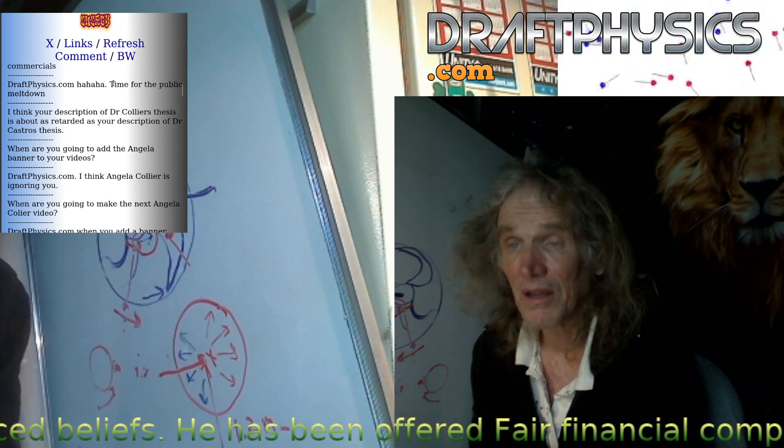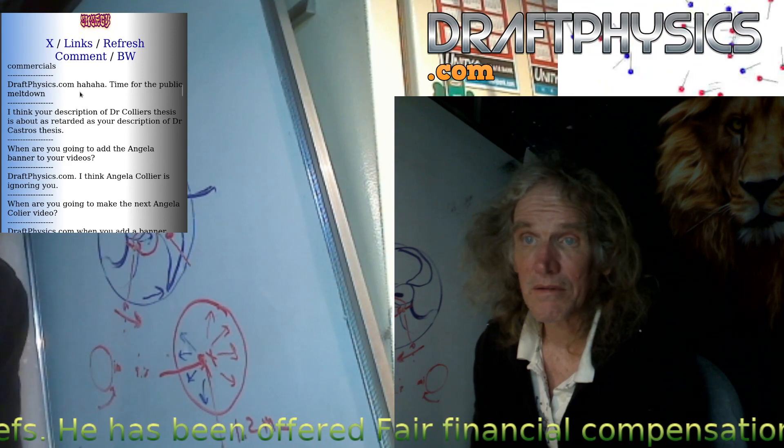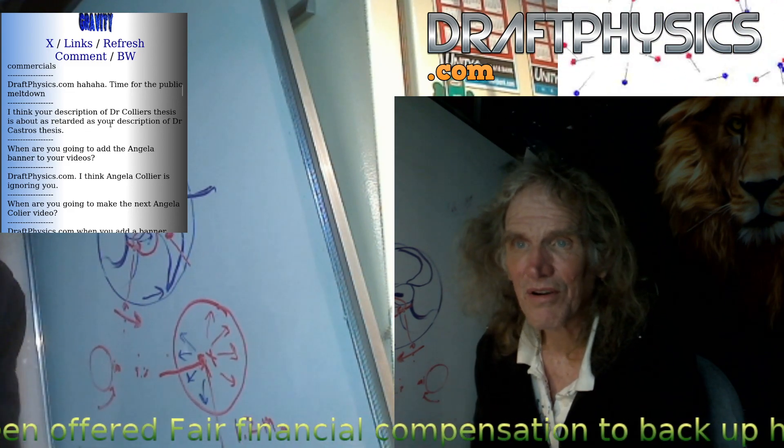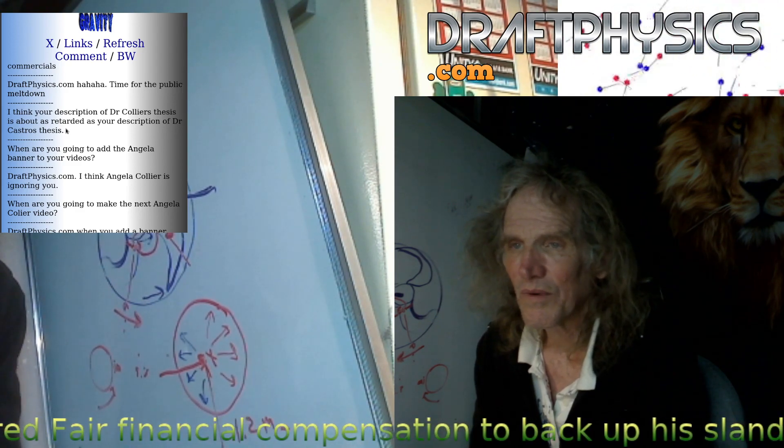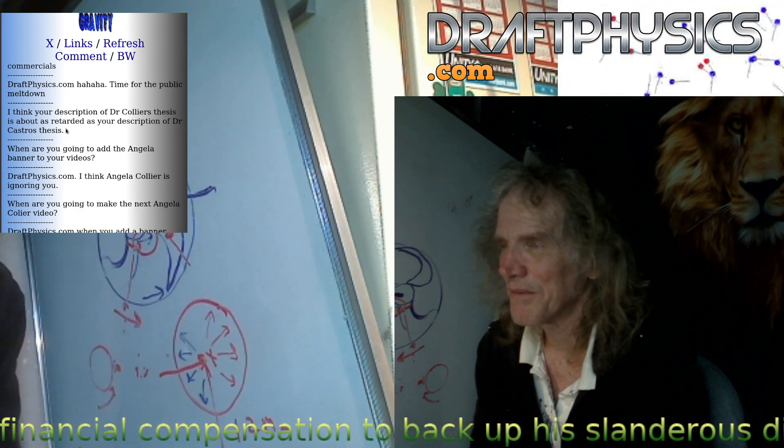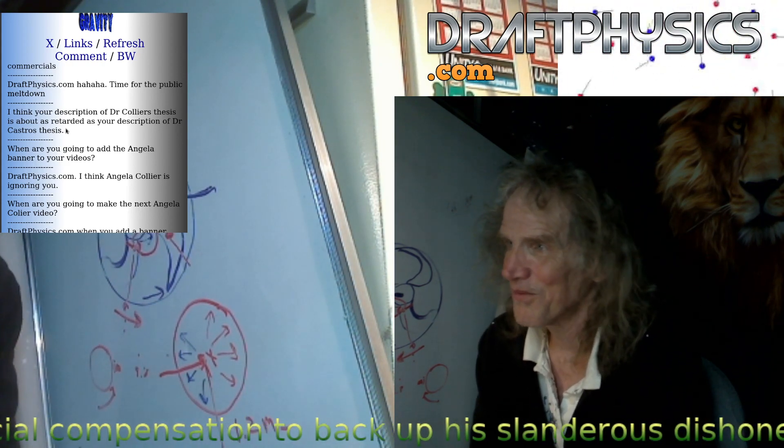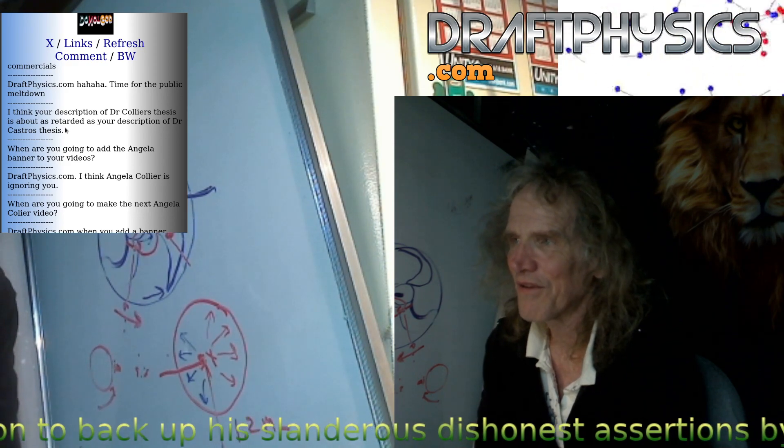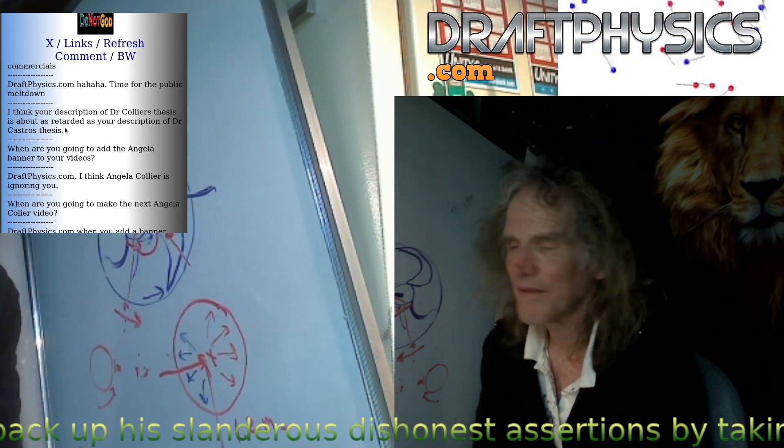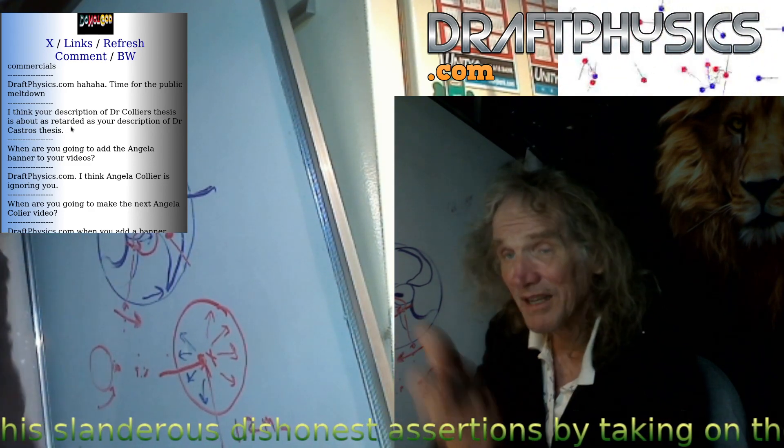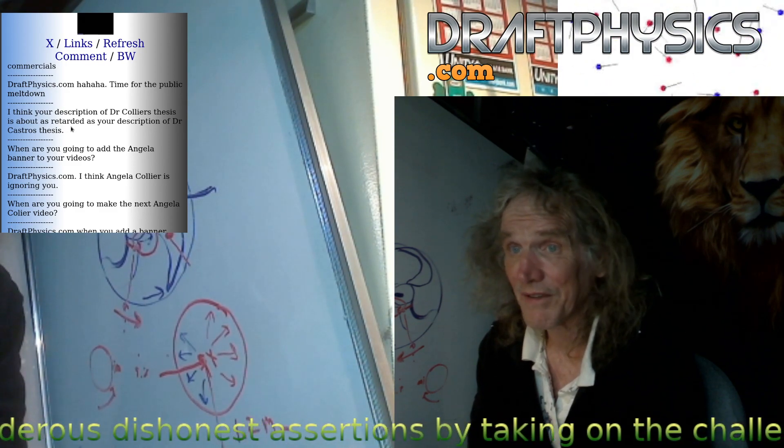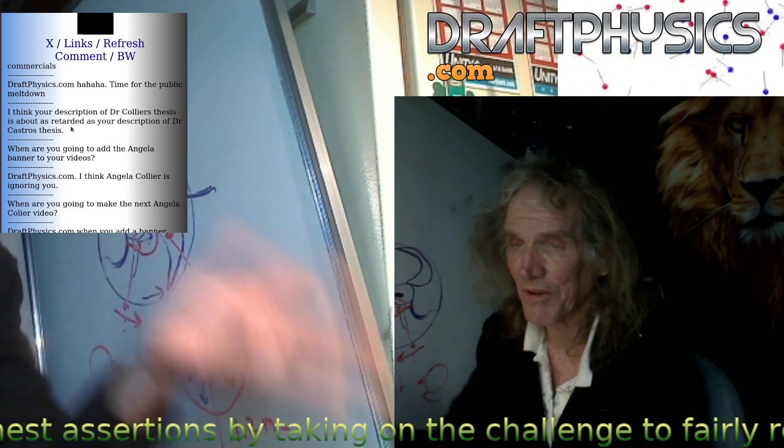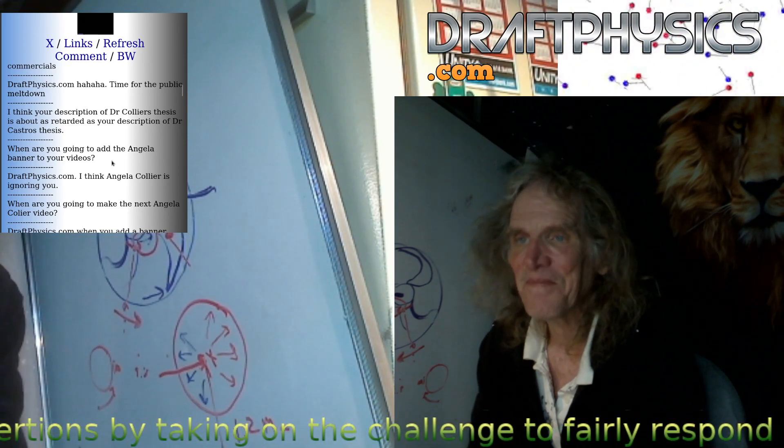Time for the public meltdown. Whatever that is. I think your description of Dr. Collier's thesis is about as retarded as your description of Dr. Castro's thesis. Where's Dr. Castro's thesis? Where did I even argue it? But I'm sure it is crap. So where is this something on the subject? How does this have anything to do with the fact that they haven't substantiated any of the crap they're arguing? They haven't proven atomic clocks aren't breakable. They certainly haven't redone the Eddington experiment. They certainly haven't shown us any twin paradox thing. They certainly haven't showed how biological metabolism slows down with velocity. They haven't shown any of this shit.